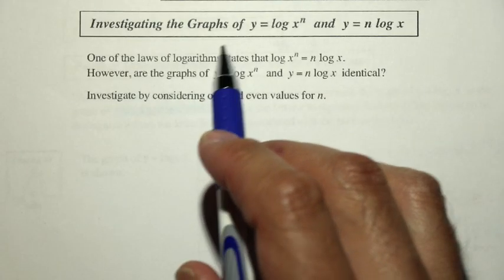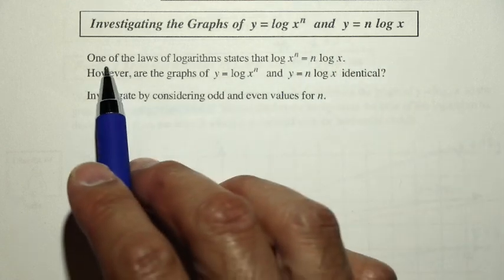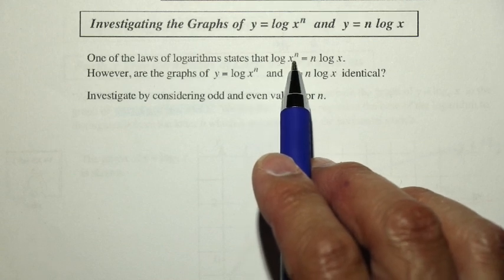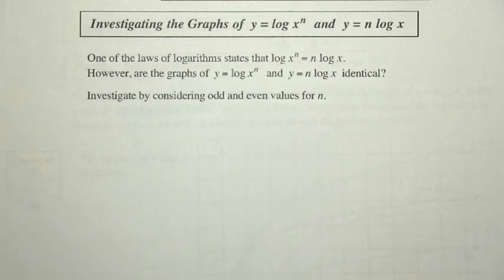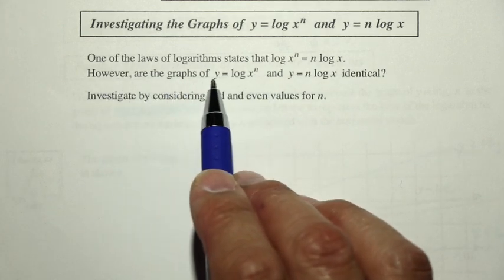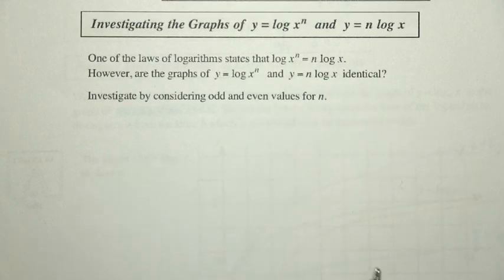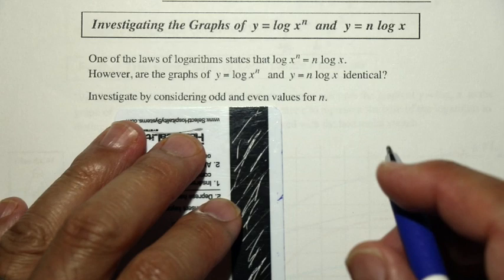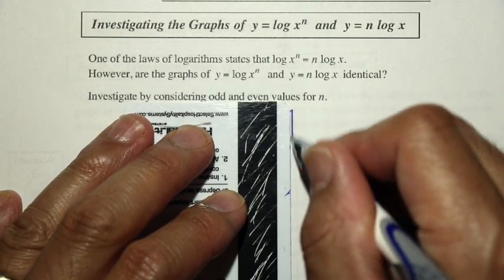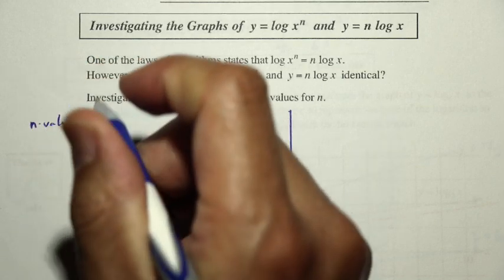Let's investigate the graphs of y equals log of x to the n and y equals n log x. One of the laws of logarithms states that log x to the n equals n log x — you can bring the exponent down in front. But are the graphs of y equals log x to the n and y equals n log x actually identical? Let's investigate by considering odd and even values of n.